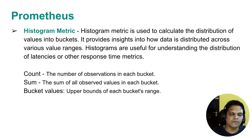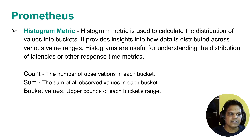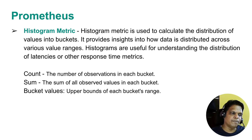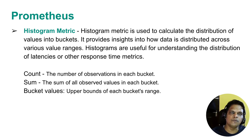The histogram metric also provides three components: count, sum, and bucket values. Count is the total number of observations in each bucket. Sum is the sum of all observed values in each bucket. The bucket value is the upper bound of each bucket range — it is the upper bound, not the lower bound. So if you define a bucket value of 0.5, it will contain values from 0 to 0.5.